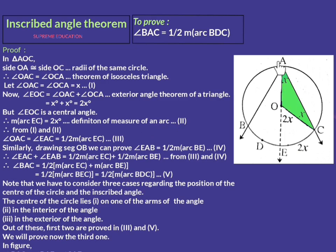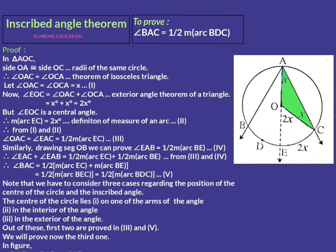Now, measure of angle OAC (or EAC) is x and measure of arc EC is 2x, meaning this angle is half of this arc. Therefore we can write: measure of angle EAC = half of measure of arc EC, since x is half of 2x. This is statement number 3.